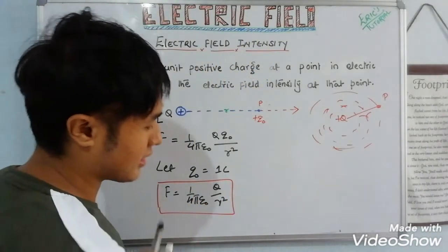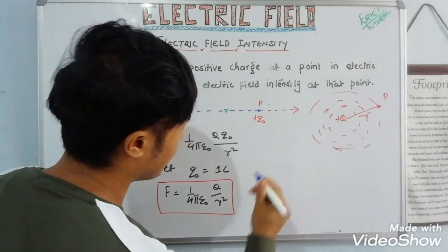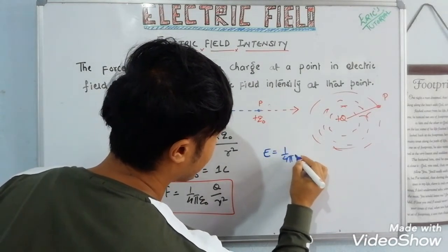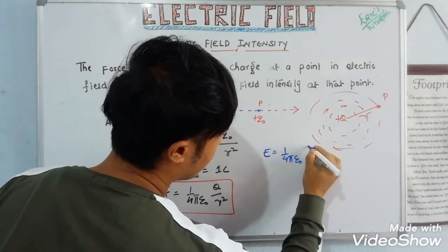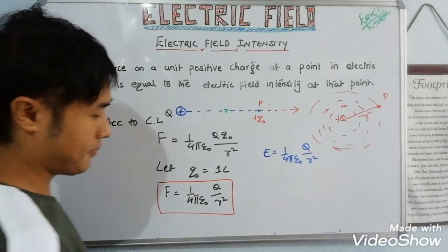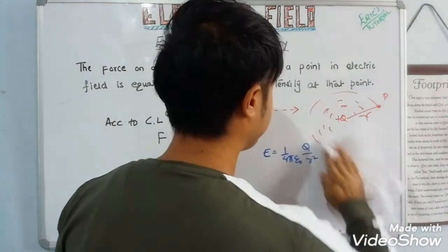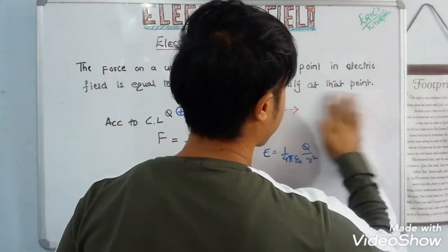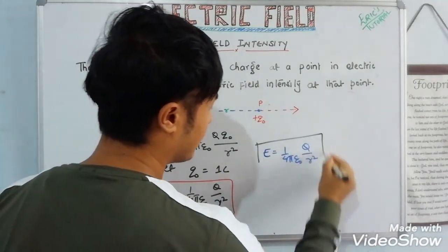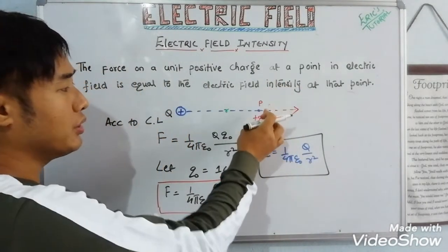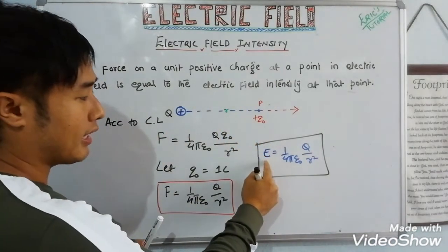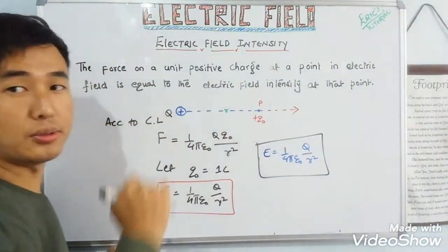So we can simply replace F and write E = (1 / 4πε₀) × q / r². That is the electric field intensity. The force on that unit positive test charge at the point is what we call the electric field intensity.